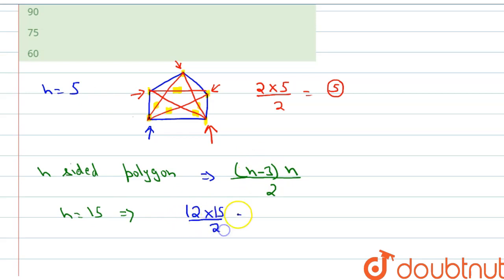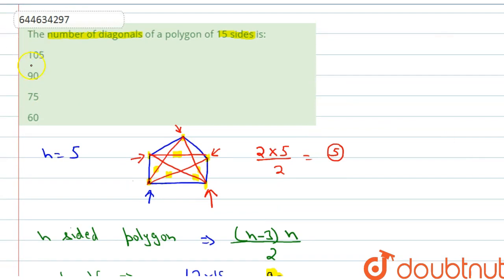This equals 90, which means 90 diagonals can exist for a polygon of 15 sides. Our option will be option B. This is the correct answer. Thank you for watching, best of luck, bye bye.